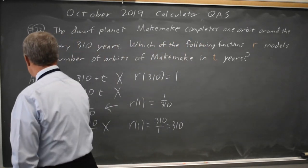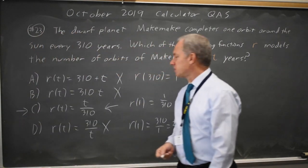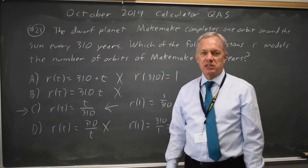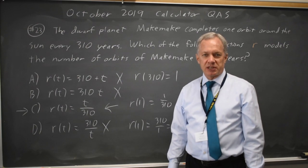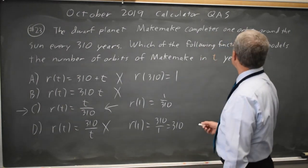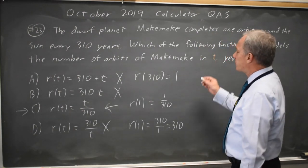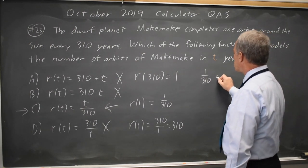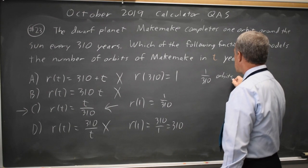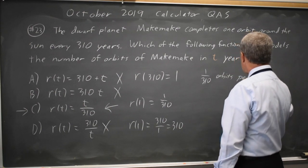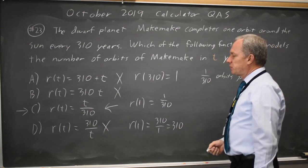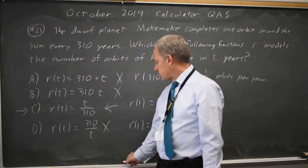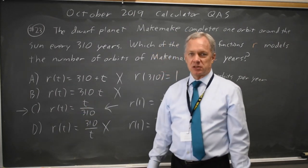The only one that gives us a reasonable answer for both one year and 310 years is choice C. That makes sense because if you do one orbit every 310 years, you do 1 over 310 orbits per year, and that would be the slope. This is r equals 1 over 310 times t, which has the correct slope.